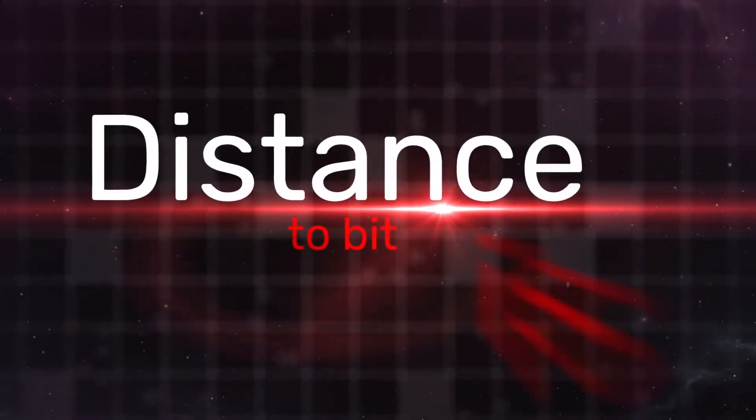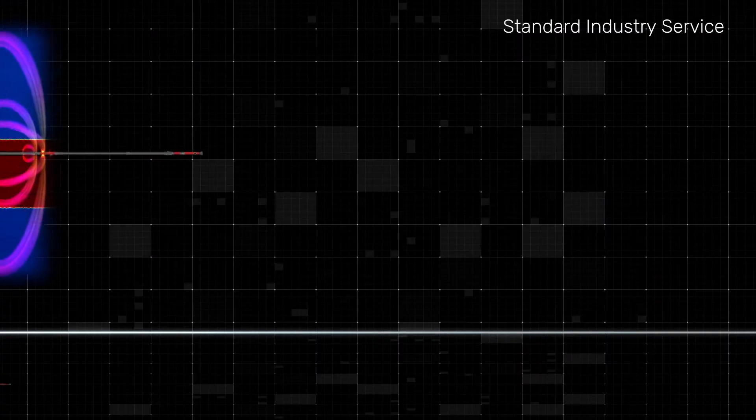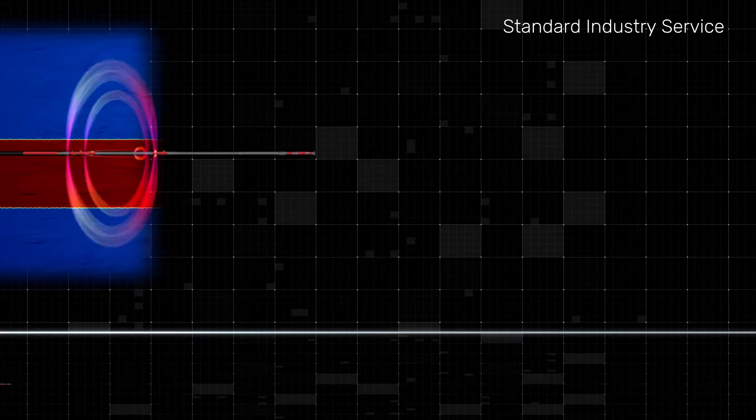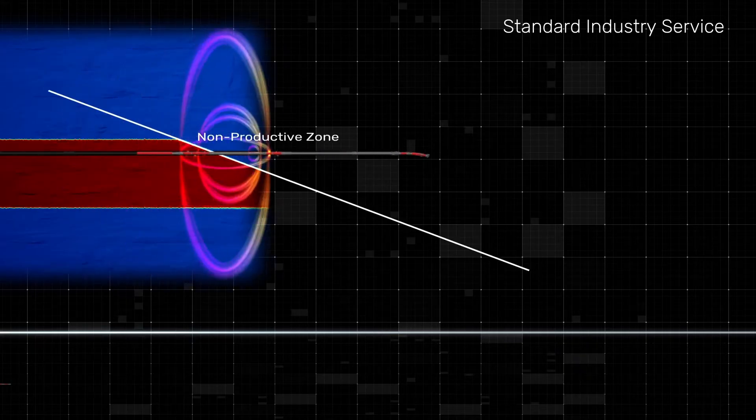The distance to bit is key. The inversion measure point is behind the rotary steerable system in a standard BHA.